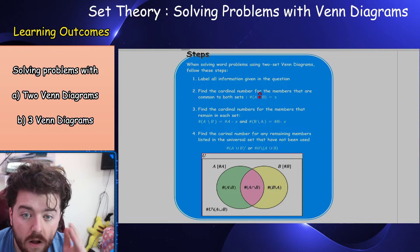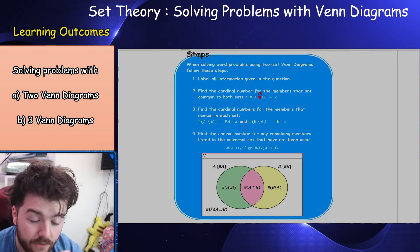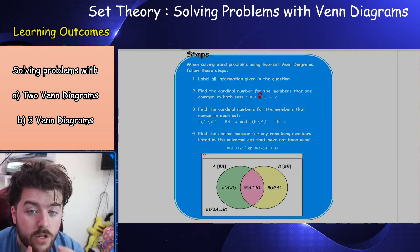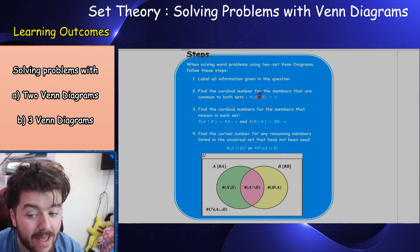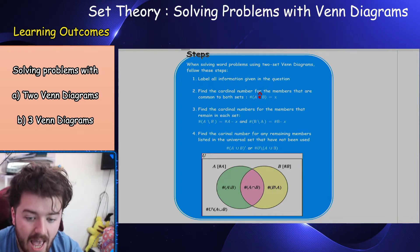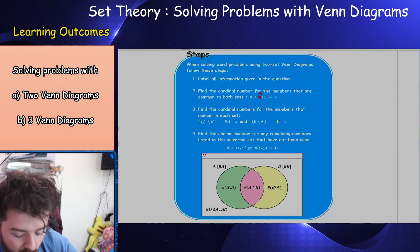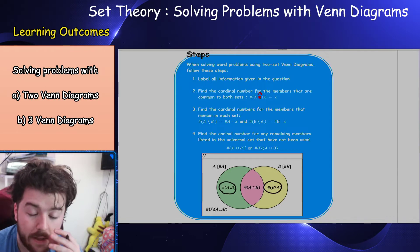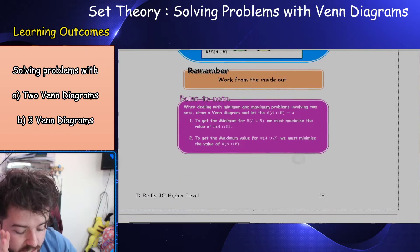When solving word problems using two-set Venn diagrams, we need to do the following. First, label all the information in the question — read through the question fully first, don't just jump in at the first line. Then find the cardinal number for the members common to both sets, i.e. the intersection. If it's given, great; if not, label it x. Finally, find the cardinal number for members remaining in each set — only in A, only in B — and the elements outside the Venn diagram.